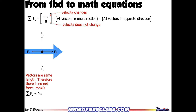Everything going in one direction minus everything going in the other direction. I'm going to choose the positive direction to be going to the right, kind of like a math class. And F4 goes the opposite direction, so I'm going to use the opposite sign — that's why it's negative. I'm adding them both, but F4 goes the opposite direction, so it's going to be the opposite sign.